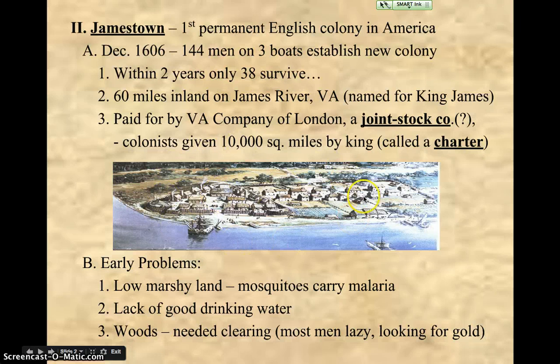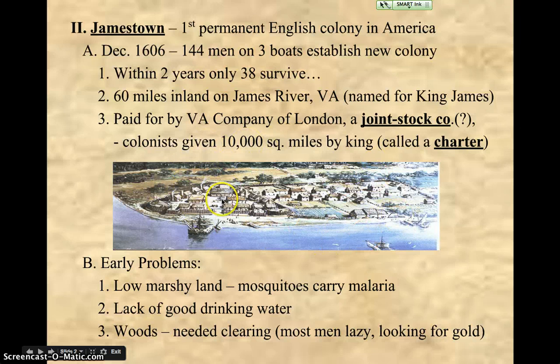When they get there, it's low, swampy land. They have mosquitoes that back then carried something called malaria — that's bad for you. They don't have good drinking water either. It's kind of mire or marsh, where you'd have to scoop around to get to the actual water, which still wouldn't be that great. And because it's mostly wooded, most of the men have to get there right away and clear out the woods — they actually have to cut down all the different trees.